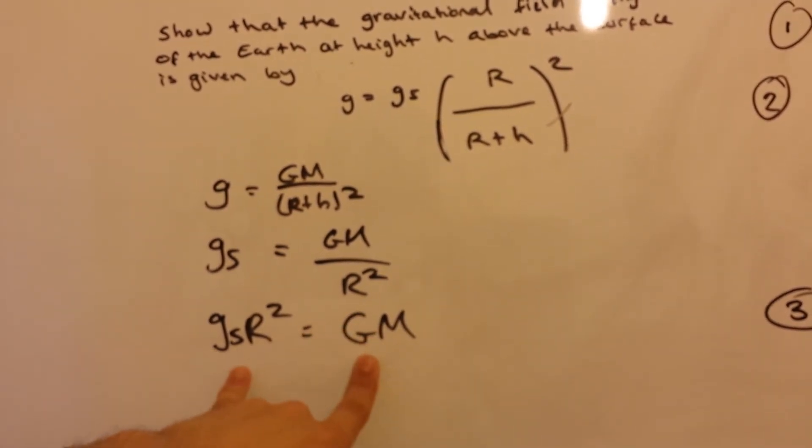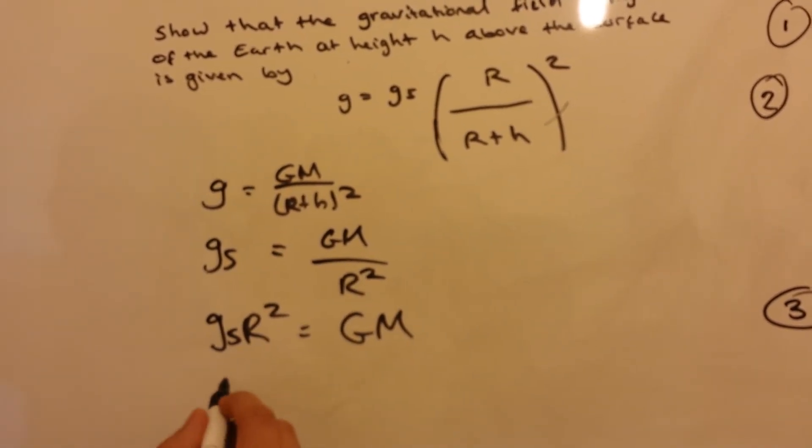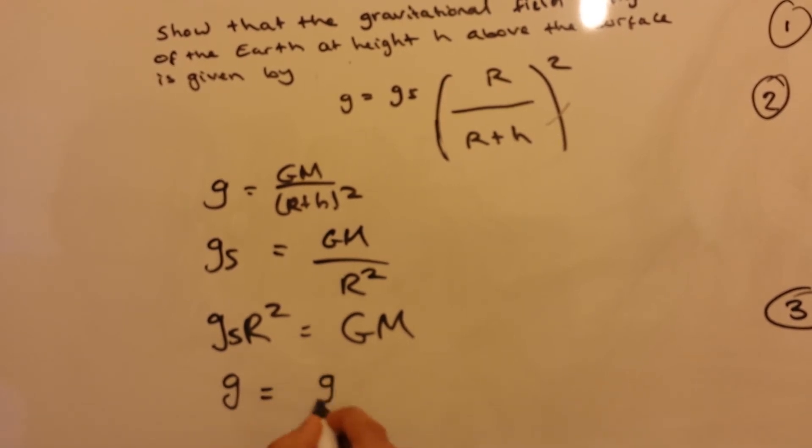We can just then substitute this into here. And we get g equals g_s R² over (R+h)².